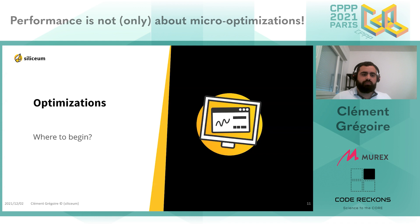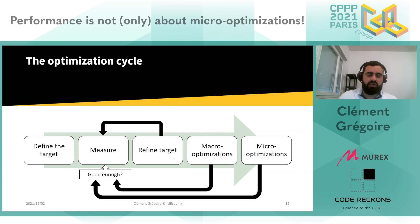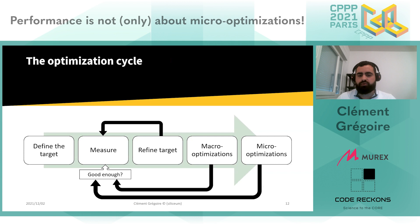Now that you know a bit more about performance, I'll talk about optimizations and where to begin. The best optimization cycle starts with defining your target. Then you start measuring your application. You refine the target because sometimes you realize it's just not possible, or that the things taking time are not what you thought. Then you do micro-optimizations as much as possible, and then you cycle: measure again, optimize, measure again, optimize.